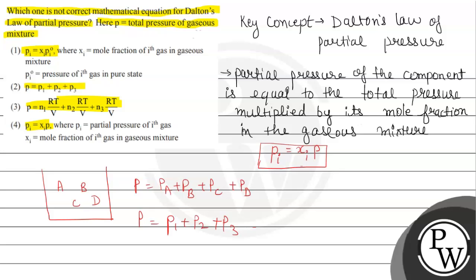And we have a third option that says PV is equal to NRT, so pressure P equals NRT divided by V. Expanding for a mixture: N1RT/V plus N2RT/V plus N3RT/V. So the third option is a correct equation derived from Dalton's law of partial pressure.